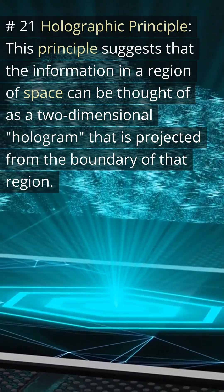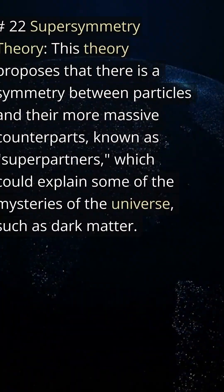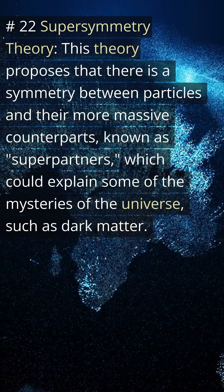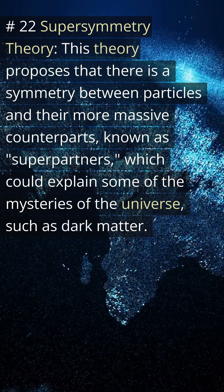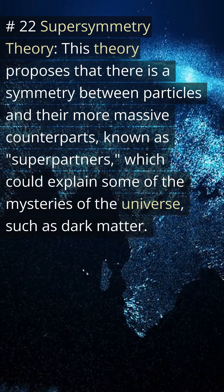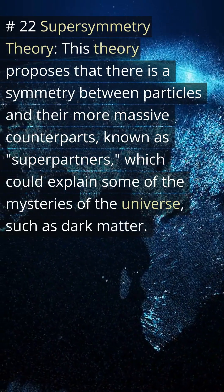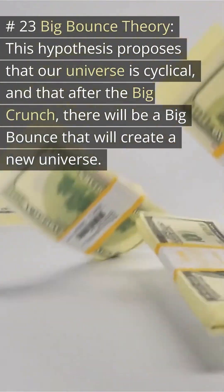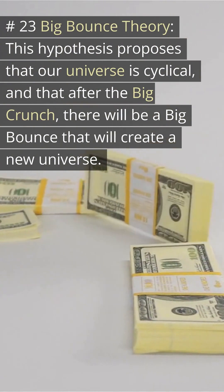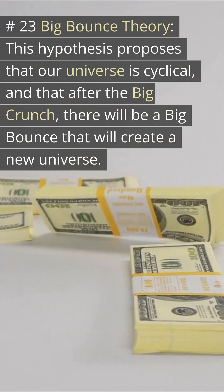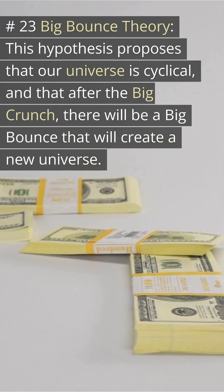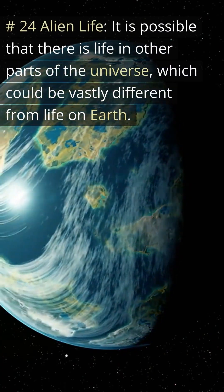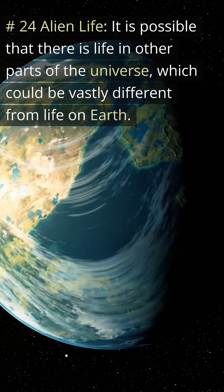Number twenty-two: supersymmetry theory — this theory proposes that there is a symmetry between particles and their more massive counterparts known as superpartners, which could explain some mysteries of the universe such as dark matter. Number twenty-three: big bounce theory — this hypothesis proposes that our universe is cyclical and that after the big crunch there will be a big bounce that will create a new universe. Number twenty-four: alien life — it is possible that there is life in other parts of the universe, which could be vastly different from life on Earth.